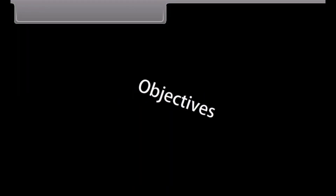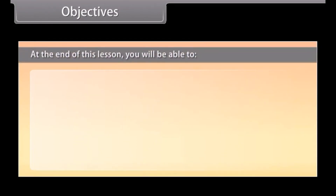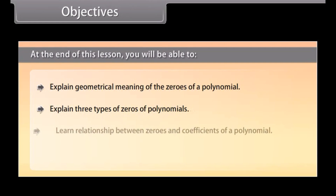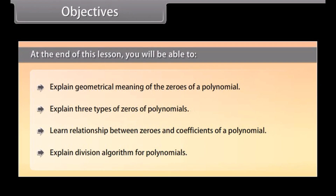Objectives. At the end of this lesson you will be able to: explain the geometrical meaning of the zeros of a polynomial; explain three types of zeros of polynomials; learn the relationship between zeros and coefficients of a polynomial; and explain the division algorithm for polynomials.